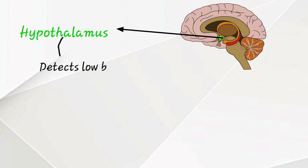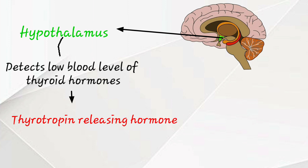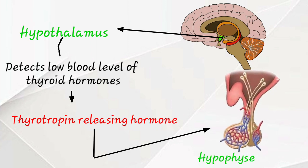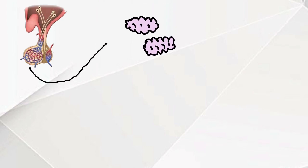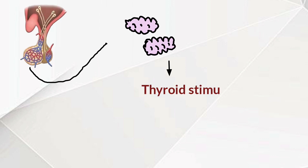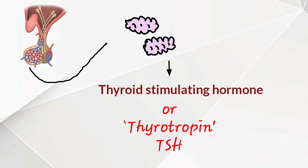Normally, the brain in the hypothalamus detects low blood levels of thyroid hormones. Hypothalamus releases thyrotropin-releasing hormone through the hypophyseal portal system to the anterior pituitary. This anterior pituitary releases thyroid stimulating hormone, or TSH.